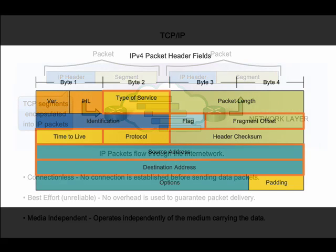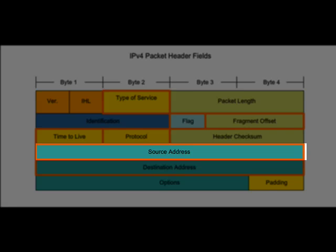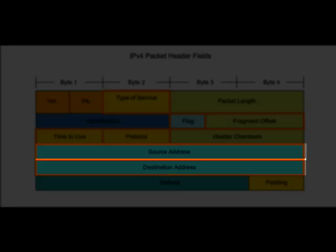IPv4 encapsulates or packages the transport layer PDU into the Layer 3 IP packet so the network can deliver it to the destination host. You can think of the IP packet as an envelope that surrounds the transport layer PDU as it travels through the network. The IPv4 packet remains in place from the time it leaves the network layer of the originating host until it arrives at the network layer of the destination host. IPv4 specifies many different fields in the packet header, but note that the source address and destination address fields are crucial to delivering the data to the intended destination.